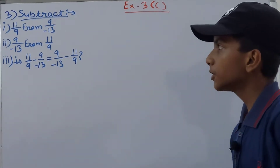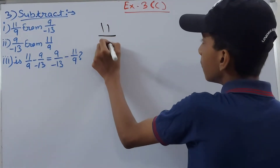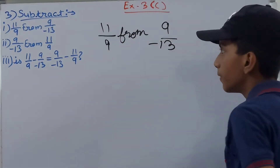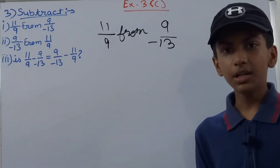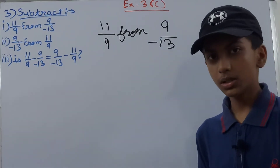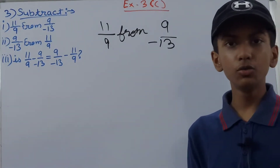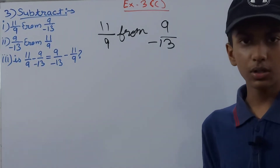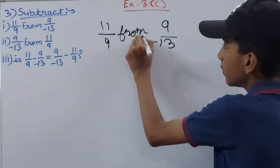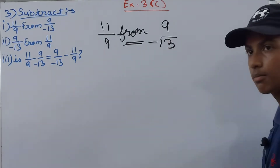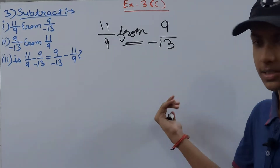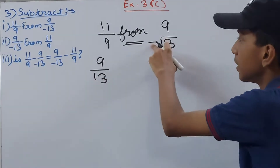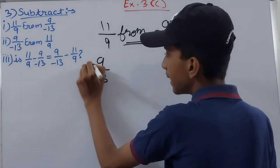This is a subtraction question. We have to subtract 11/9 from 9/(−13). Now, the rule is: what is written after 'from' is always written first, followed by the minus sign. So we have 9/(−13) first, and since the denominator is −13, the minus sign moves to the numerator, giving us −9/13 − 11/9.